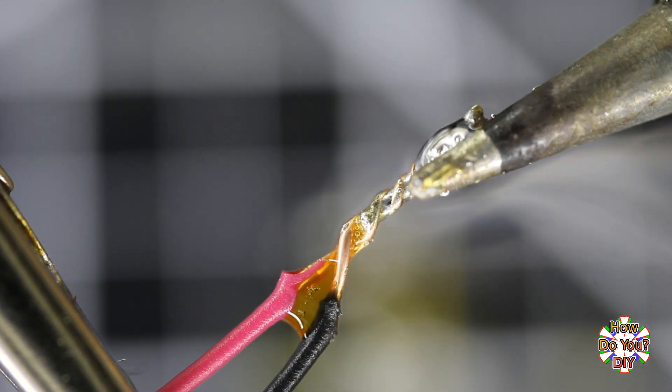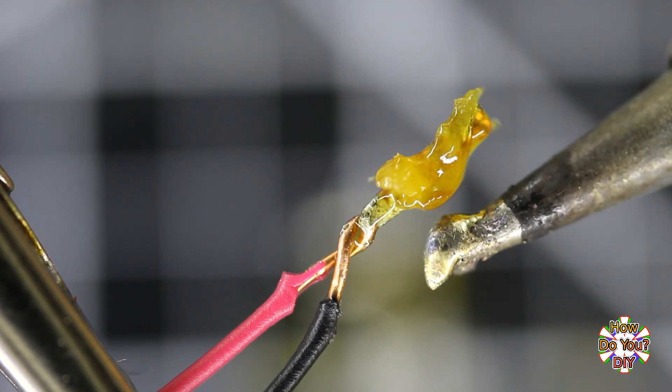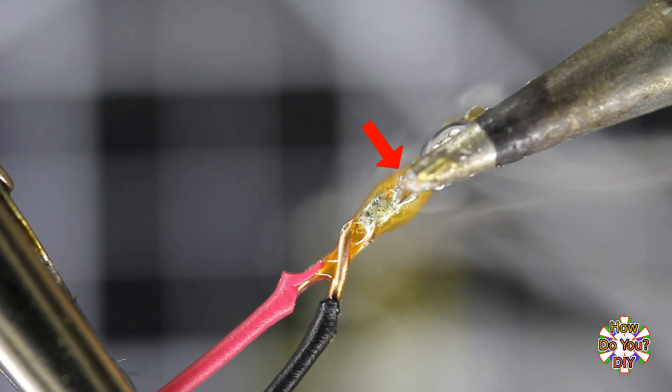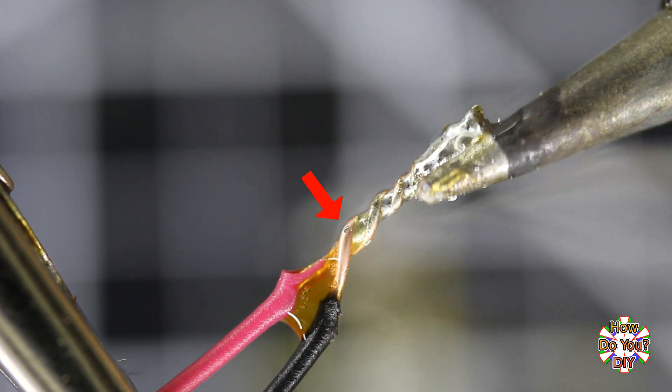Now let's go back and watch it again, but this time watch the wires. As the flux melts and sizzles, you can see the solder flow right behind it as it bonds to the wires.